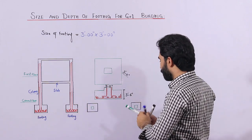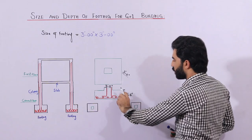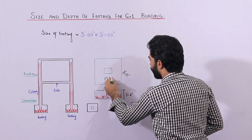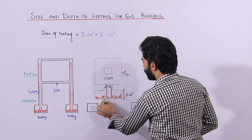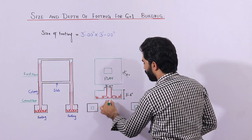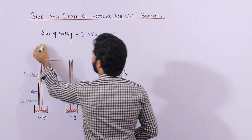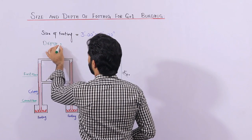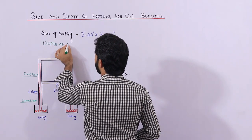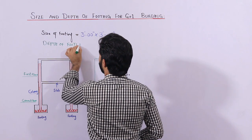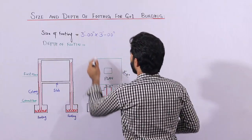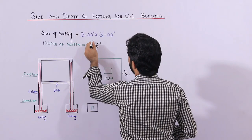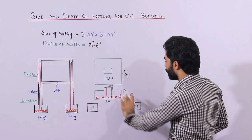Next, what should be the depth of footing? You can see here — this is the plan of the footing, and next you can see this is a cross section. The depth of the footing should not be less than 3 feet 6 inches for a normal residential building.